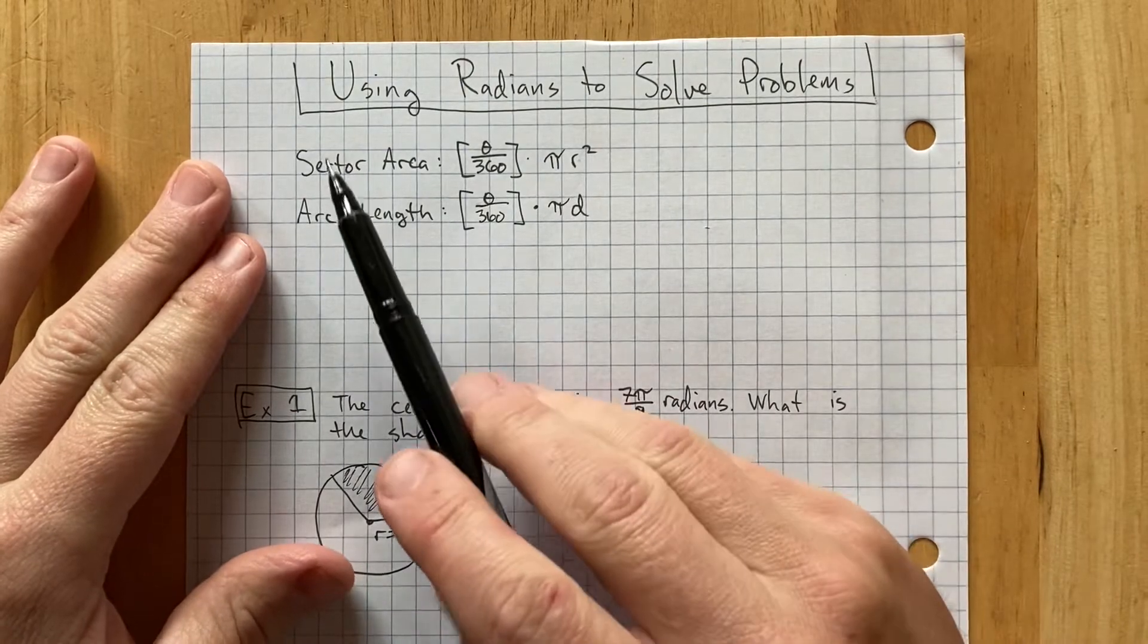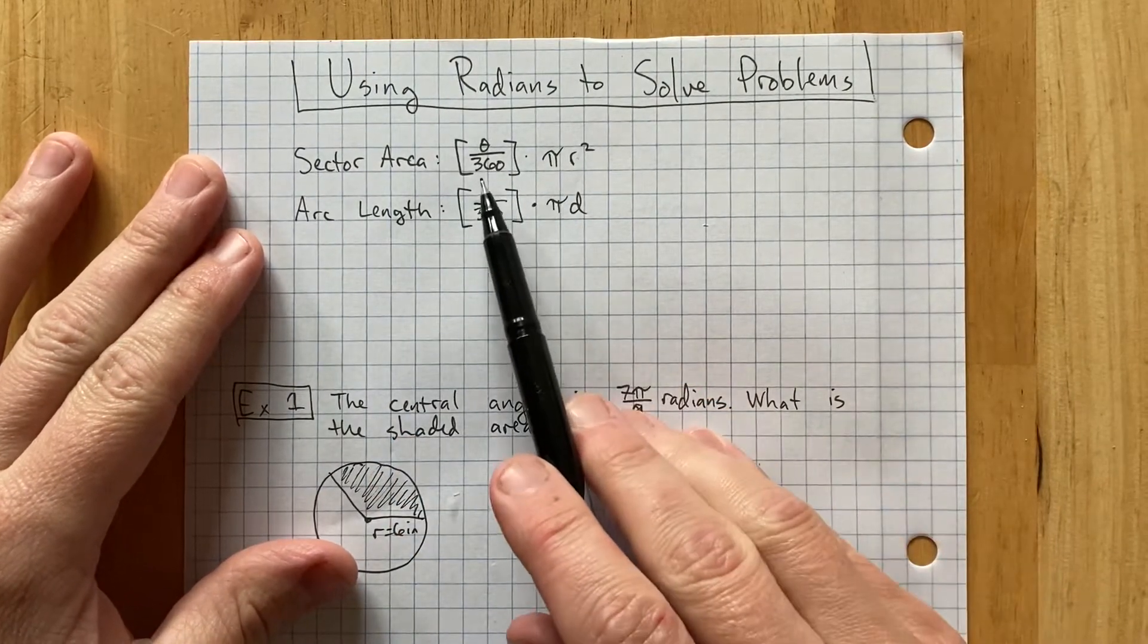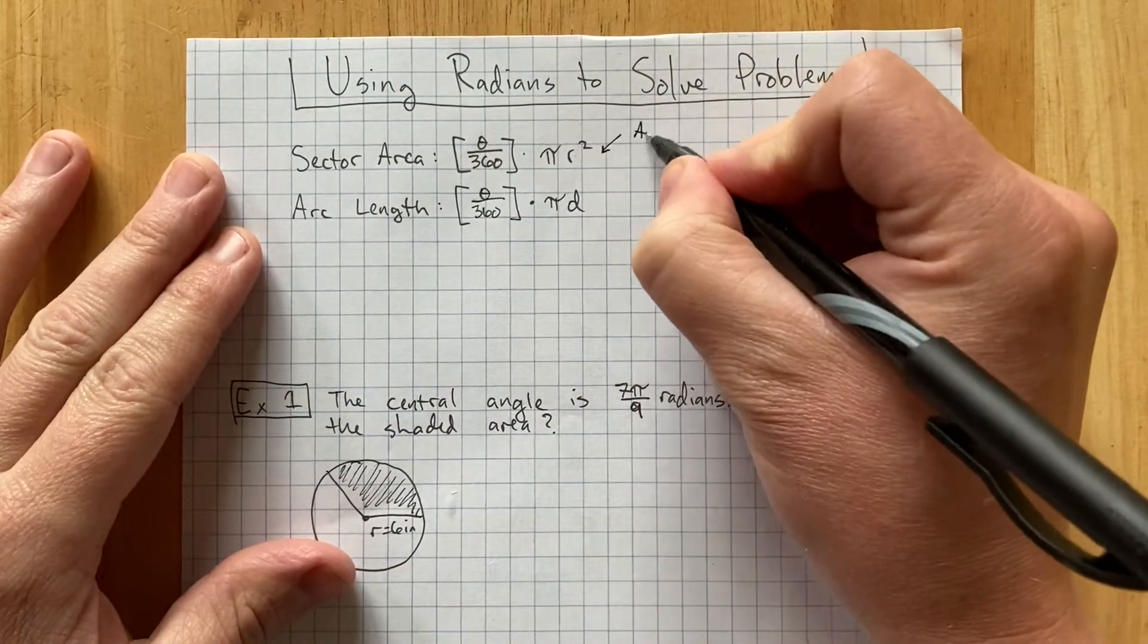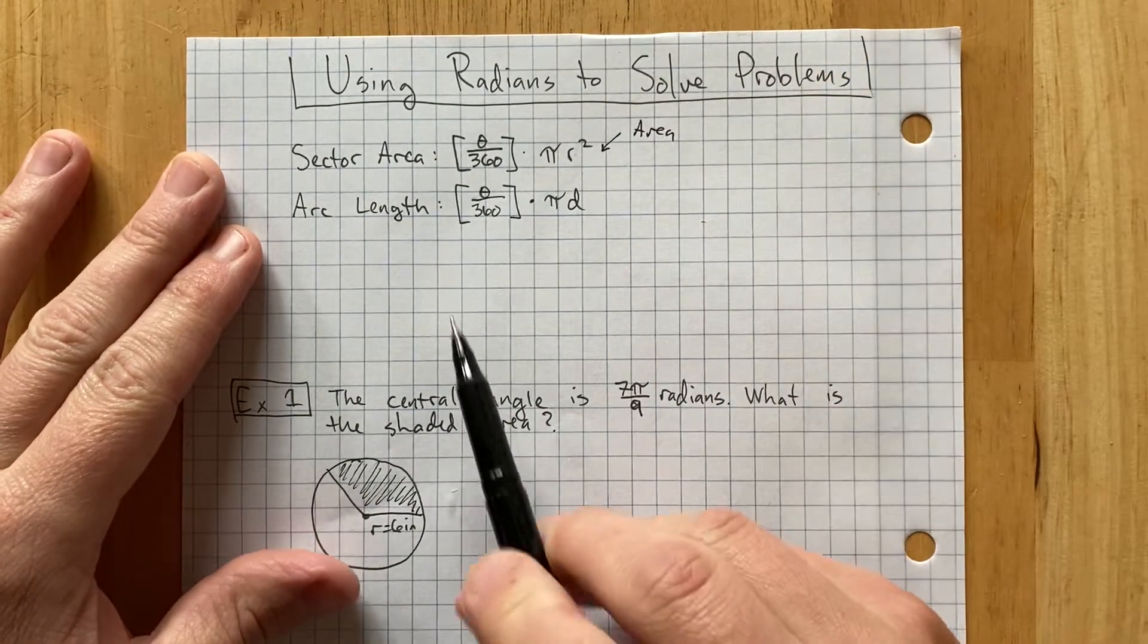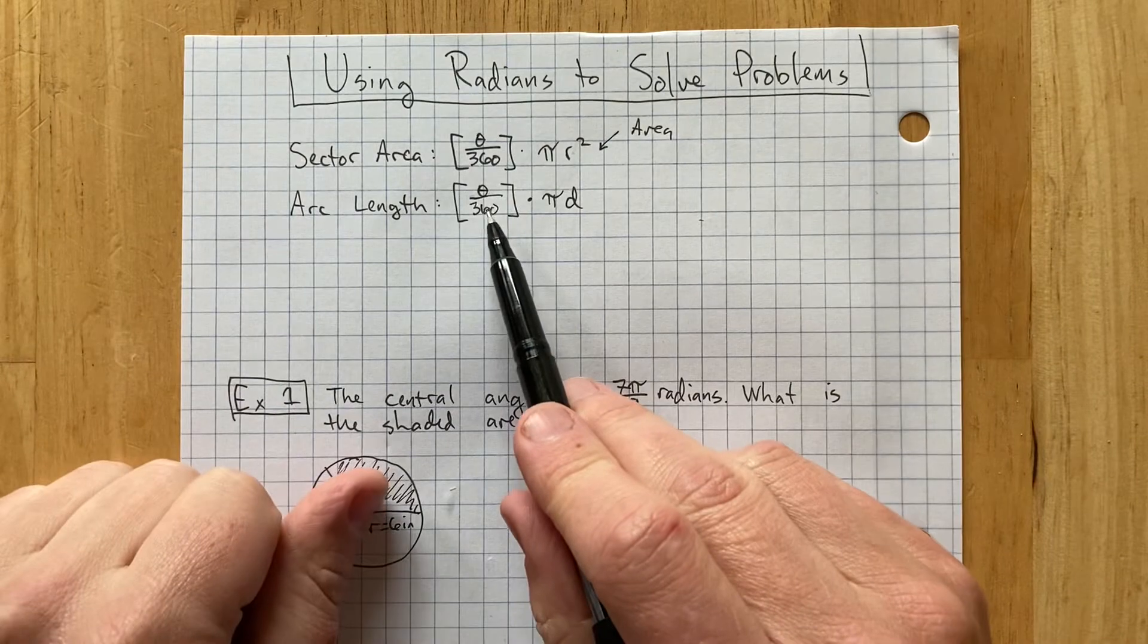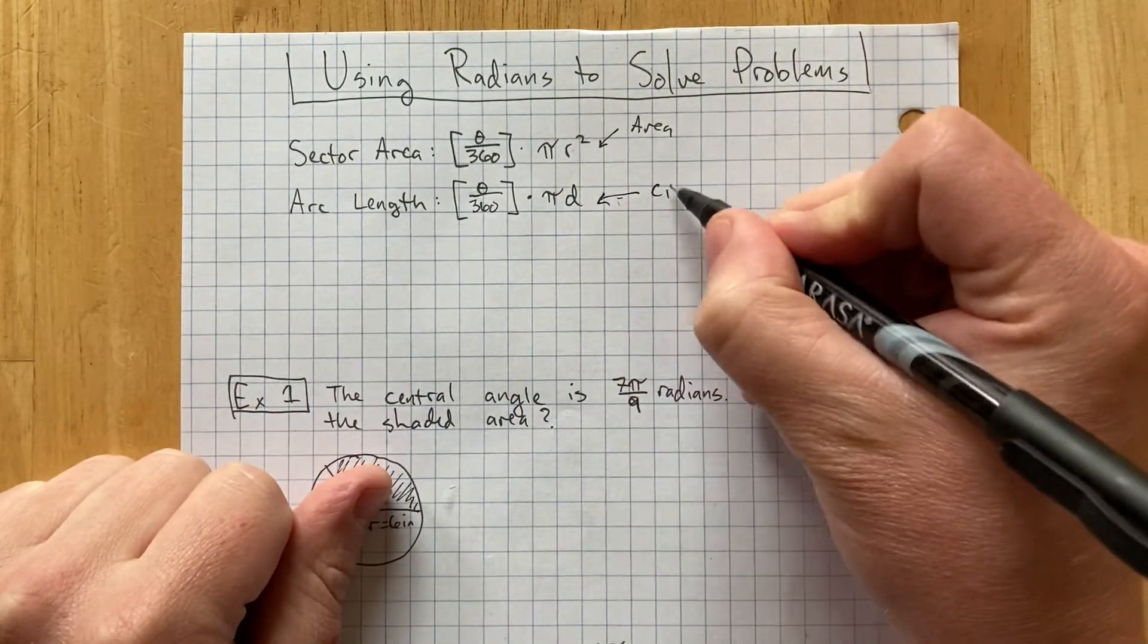So I'm going to remind you that if we wanted to find the area of a circular sector, you do theta over 360 times pi r squared, pi r squared being the area of the entire circle. And if you wanted to find the length of an arc, like we learned a couple days ago, you would do theta over 360 times pi times diameter, pi times diameter being the circumference of the circle.